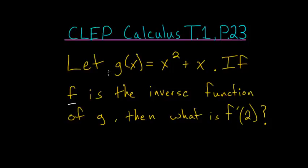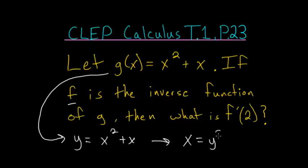One way to start this problem is to take our g of x and set it equal to y, so that y equals x squared plus x. Then we can find the inverse of this by switching x and y, so that we have x equals y squared plus y.